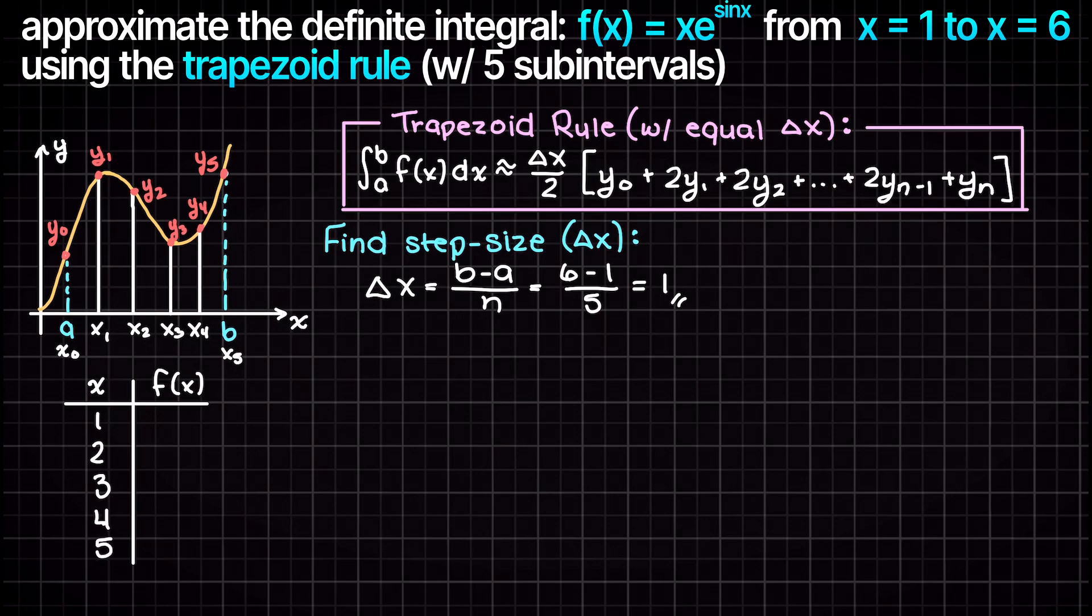As we just wrote out, we need to find our output values such that we can build our approximating trapezoids. Therefore, we will build the following input-output table and plug our inputs into the function that we wish to approximate.